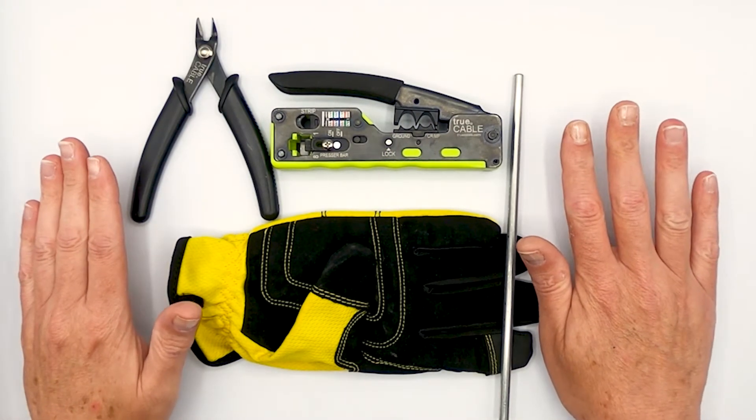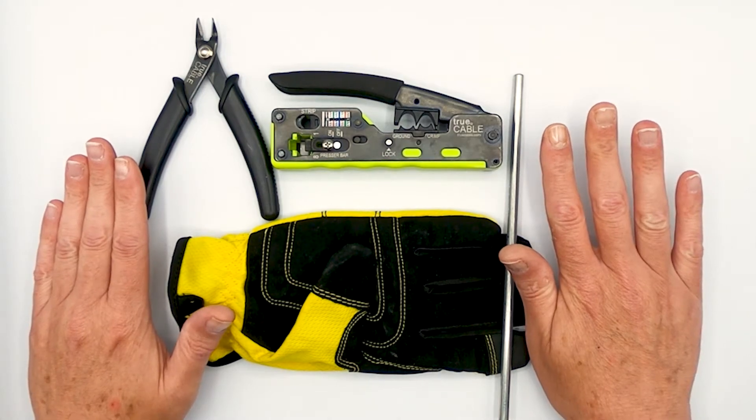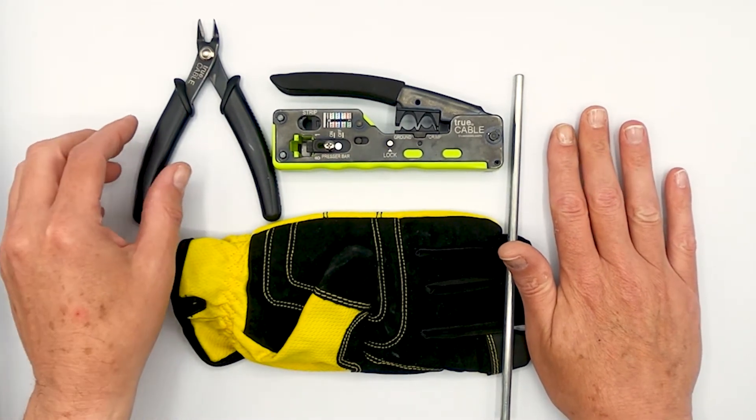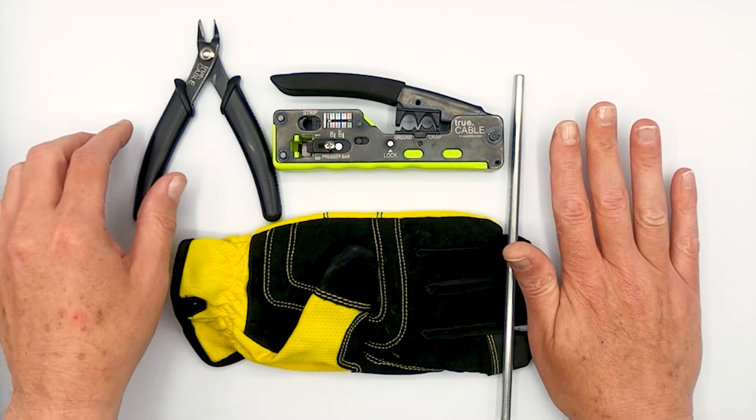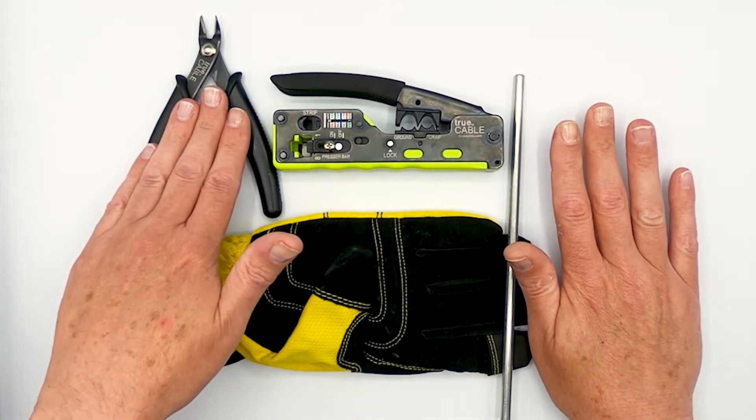Okay, well before we get into the actual termination part here, I thought it would be a good idea to talk about the tools you're going to need. The absolutes that you have to have are flush cutters. This is to prepare your Ethernet cable for termination.